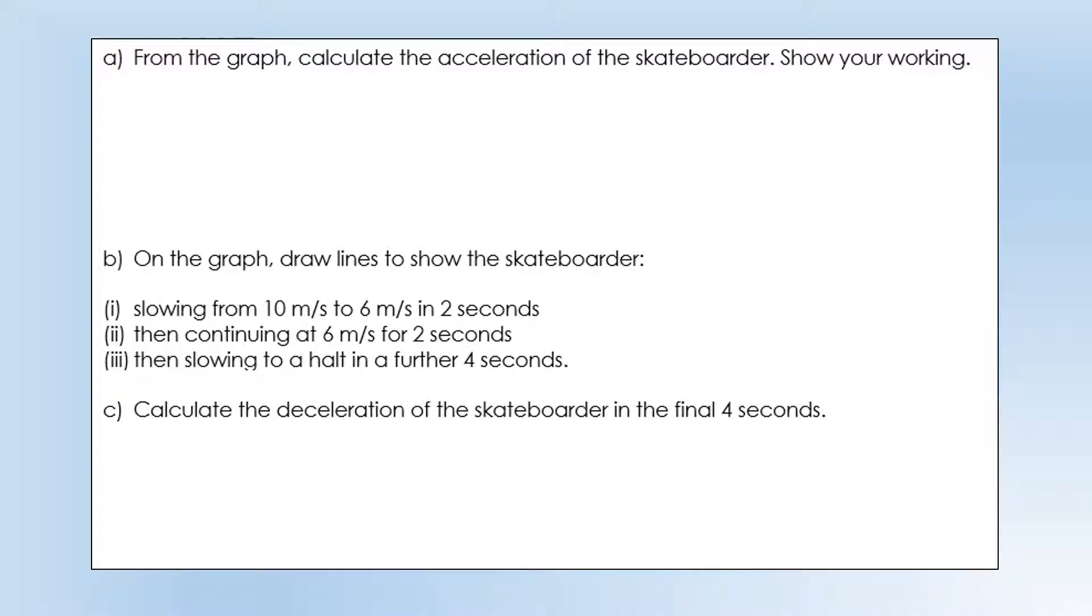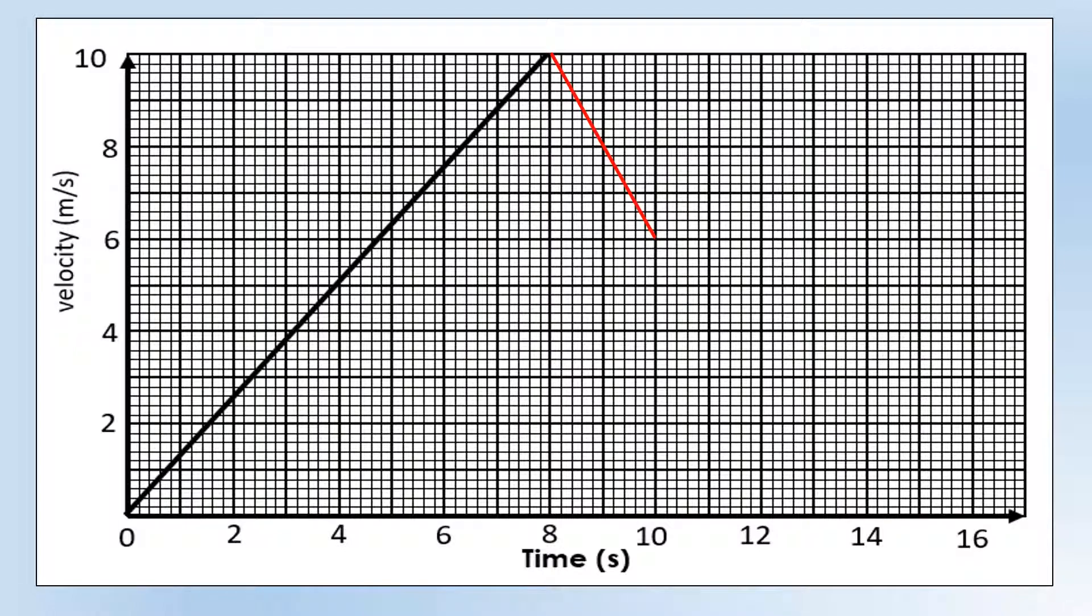On the graph, draw lines to show the skateboarder slowing down from 10 to 6 in 2 seconds, constant speed of 6 for 2 seconds, and becoming stationary after 4 seconds. There's our 2 seconds deceleration, there's our constant speed, and there's our final deceleration.